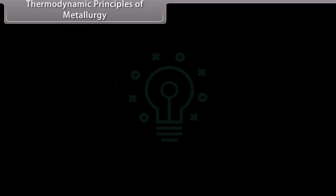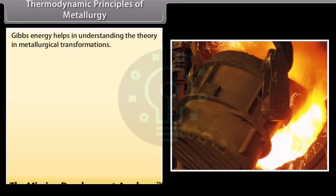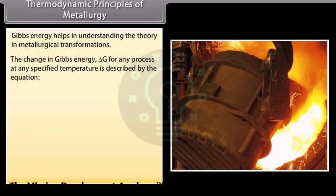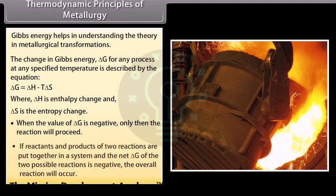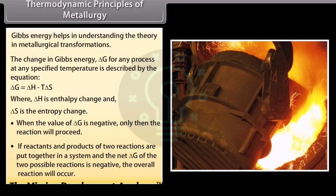Thermodynamic principles of metallurgy. Gibbs energy helps in understanding the theory in metallurgical transformations. The change in Gibbs energy Delta G for any process at any specified temperature is described by the equation Delta G is equal to Delta H minus T delta S, where delta H is enthalpy change and delta S is the entropy change. When the value of delta G is negative, only then the reaction will proceed. If reactants and products of two reactions are put together in a system and the net delta G of the two possible reactions is negative, the overall reaction will occur.